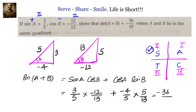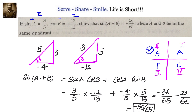Simplifying: (3/5)×(-12/13) + (-4/5)×(5/13) = -36/65 + (-20/65) = -56/65, which is what we needed to prove.